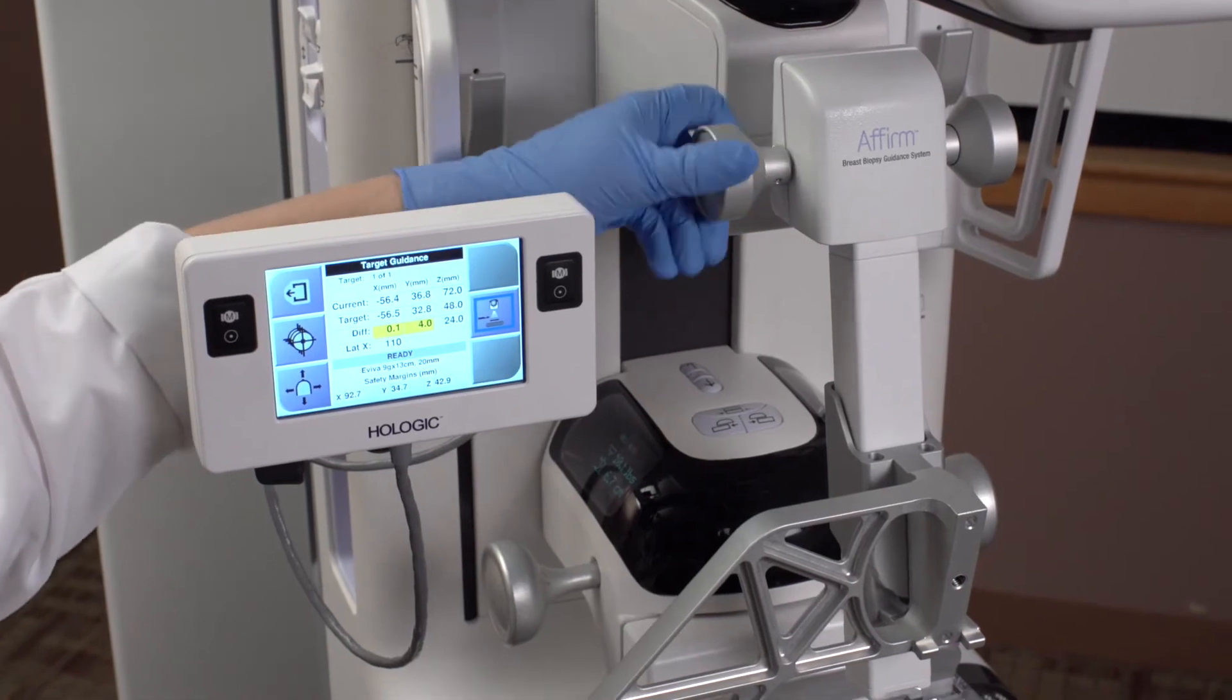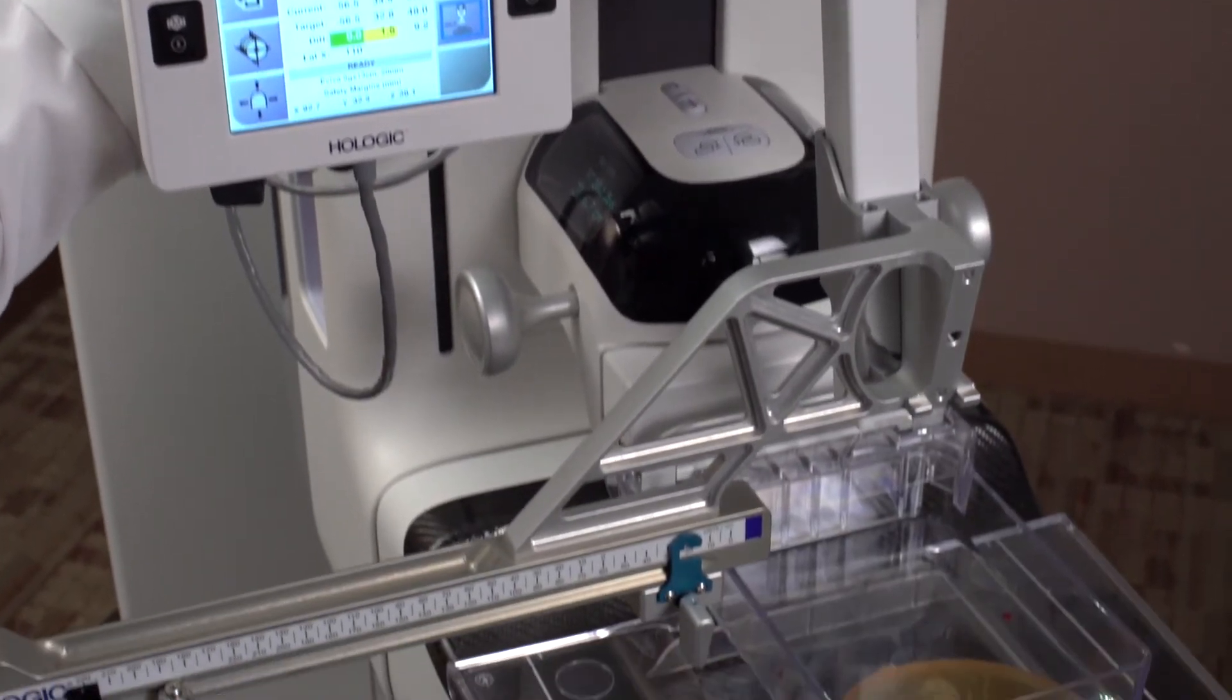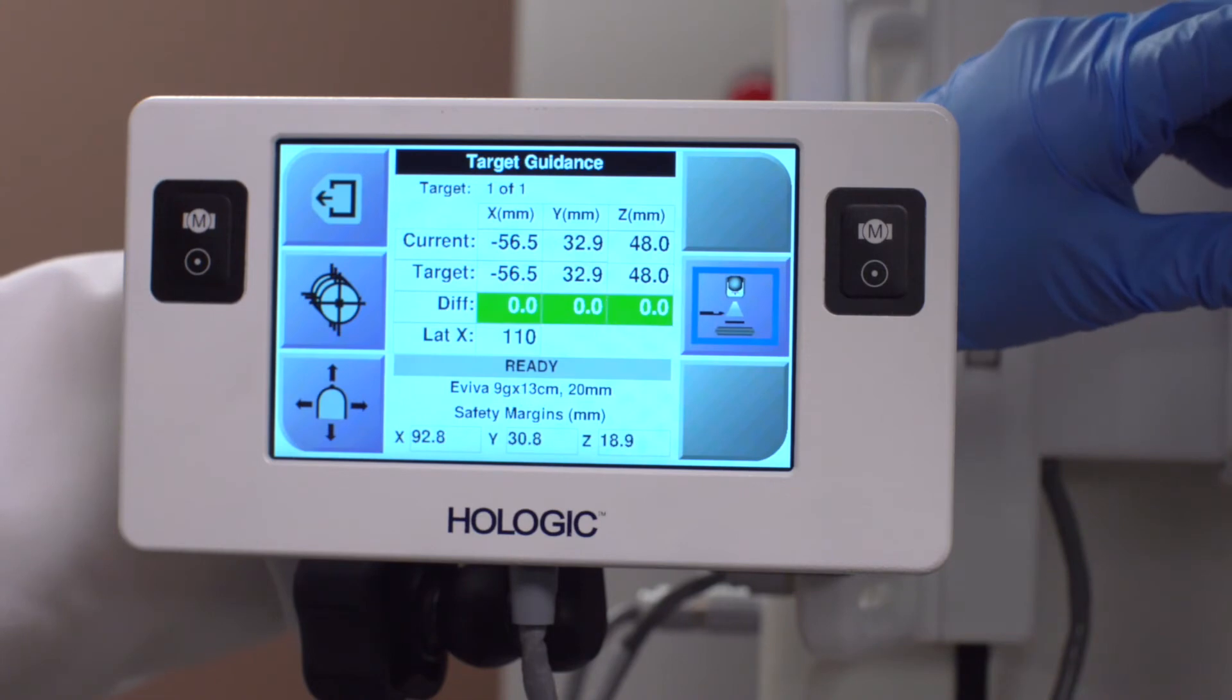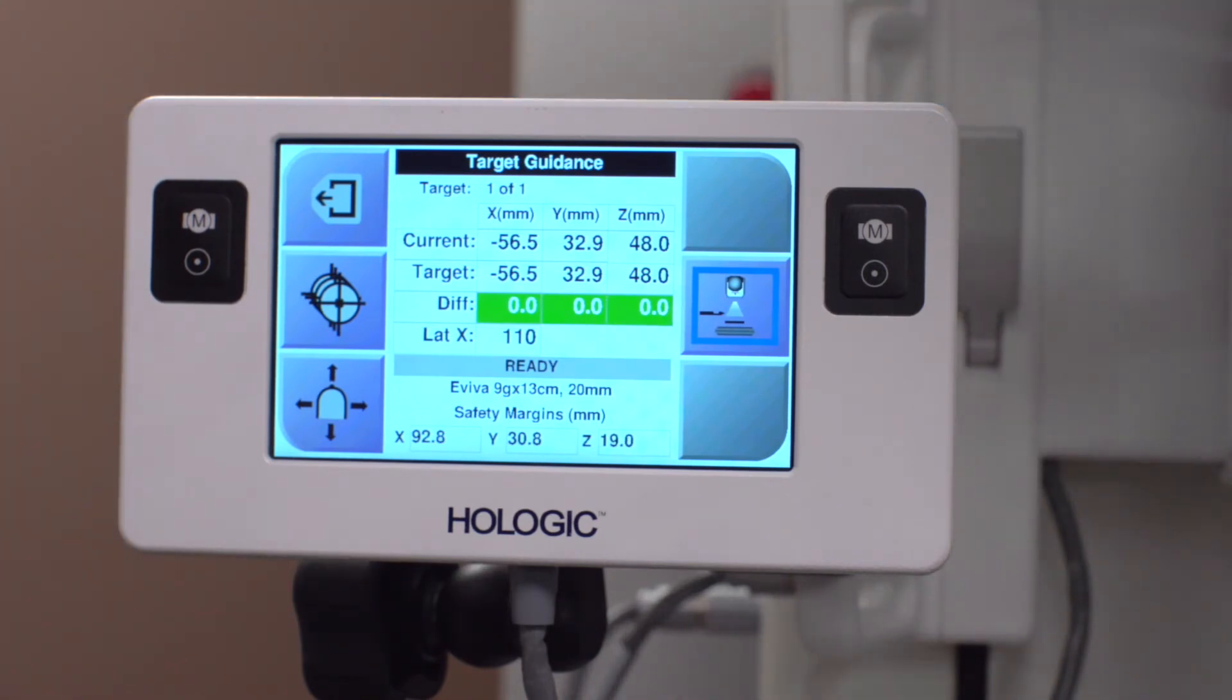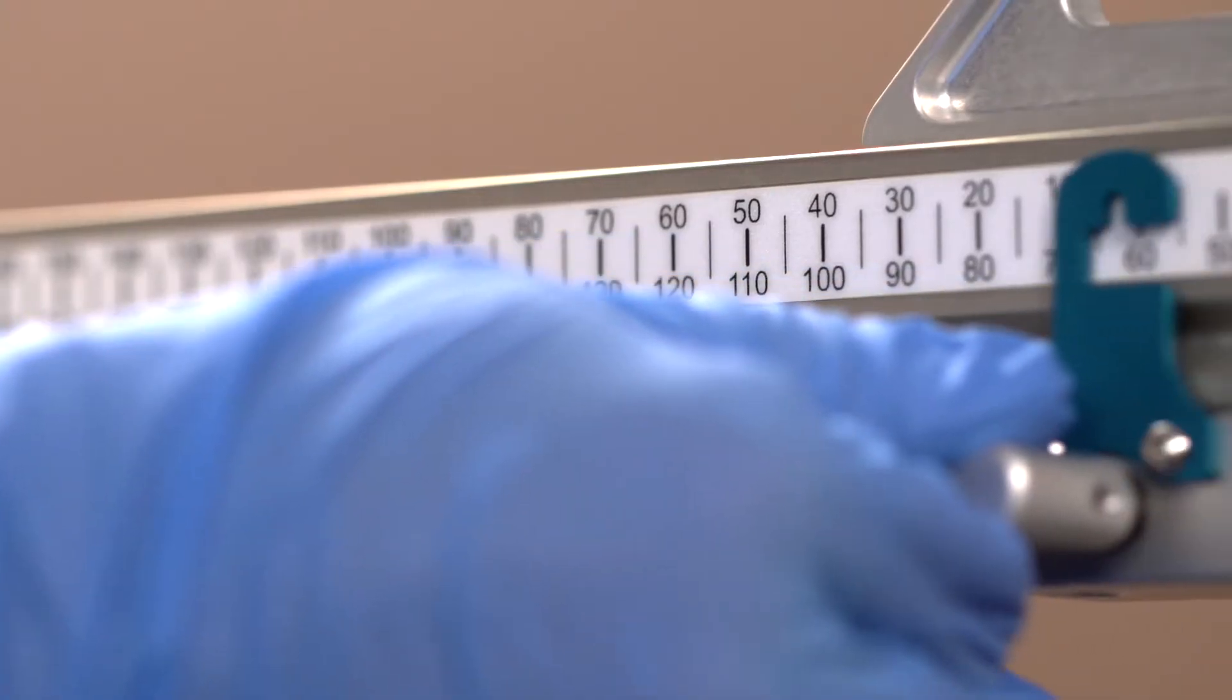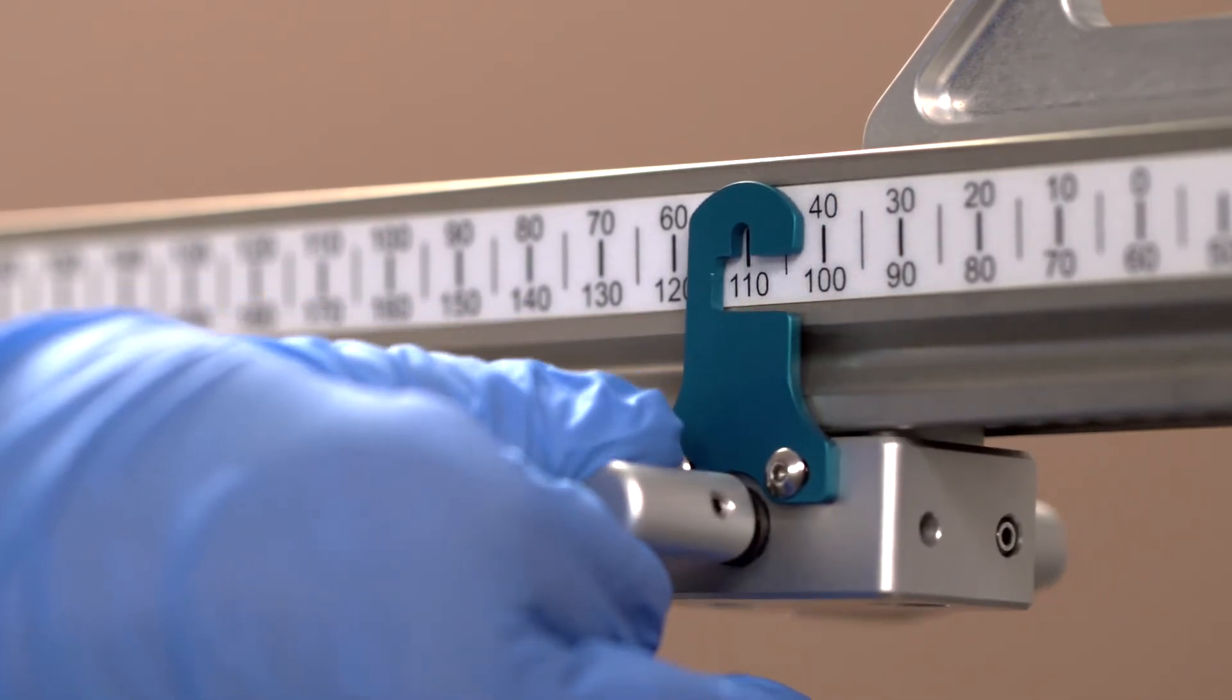The Z knob is then used to move the Z rail and lateral arm until all numbers are green, and the numbers read zero across the differential line. Set the fourth coordinate as shown on the BCM.